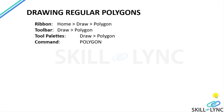After learning the rectangle tool and various options, now we are going to learn about how to draw regular polygons. Regular polygons, as the name suggests, is the polygon with all sides which are equal. A polygon is basically a closed geometry which has many sides.